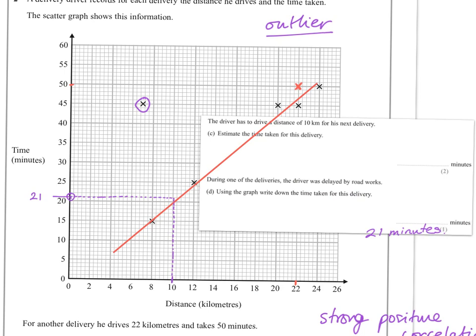Okay let's have a look at the next bit. It says here during one of the deliveries, the driver was delayed by roadworks. Using the graph, write down the time taken for this delivery. Now one thing I will say is, be very careful here. This has changed a little bit because I had to move this part here to see the other part of the question. And when I do that, everything moves, so don't think that's a mistake.